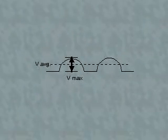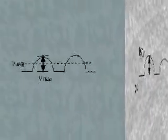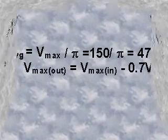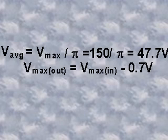Let's look at an example. What is the average value of the rectified voltage shown in the figure? The average voltage is equal to V sub max divided by pi or 47.7 volts.